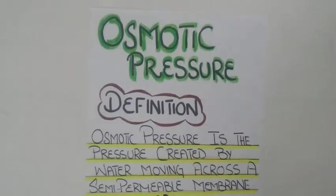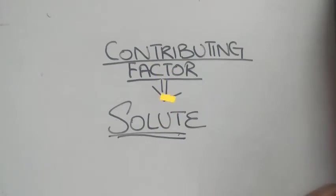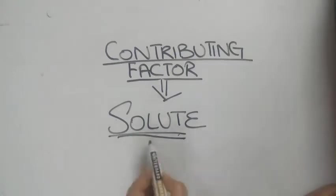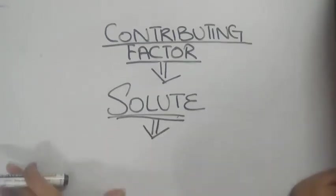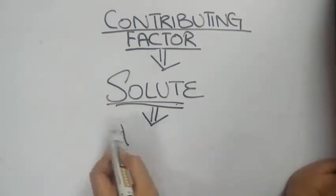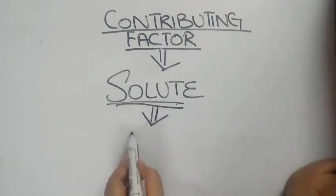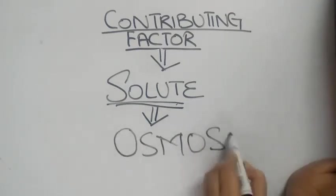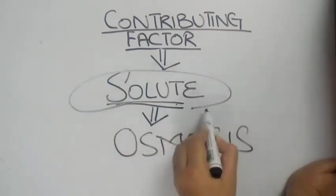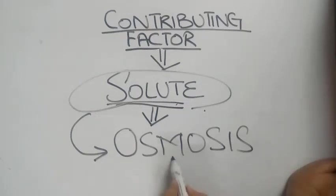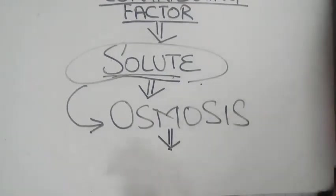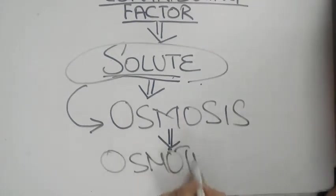Osmotic pressure is defined as the pressure which is created by water moving across a semi-permeable membrane. The solute particles cannot pass through the semi-permeable membrane; they are retained in the solution. The retention of these solute particles causes the movement of water across the semi-permeable membrane, which is osmosis. So basically, it is the solute that causes osmosis of water, and osmosis of water results in the development of osmotic pressure.